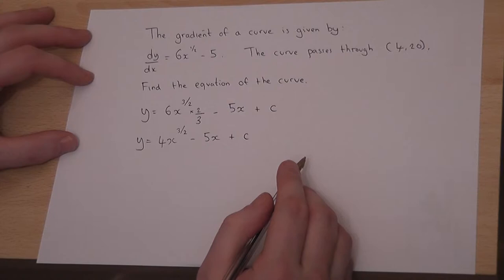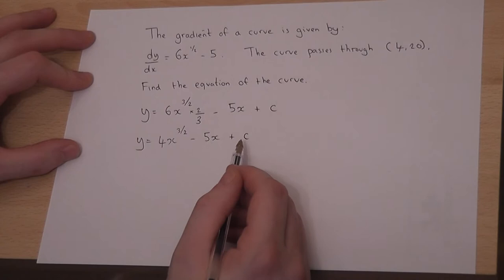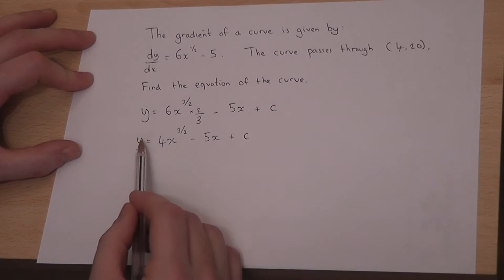And the question, therefore, is what value must c be to make this pass through the coordinate (4, 20)? This is called the general solution to the differential equation. To find the particular solution which passes through that coordinate, I must put these two values into the equation to find which value of c makes the equation hold.